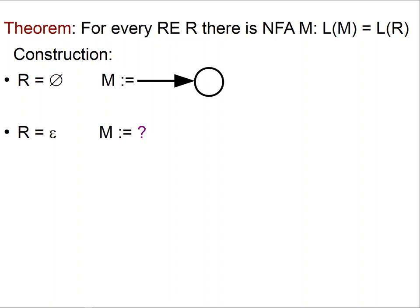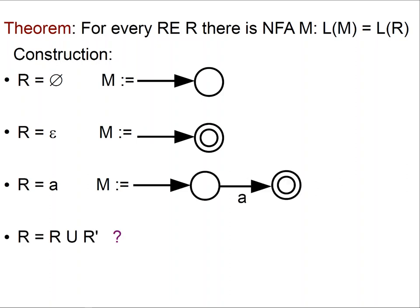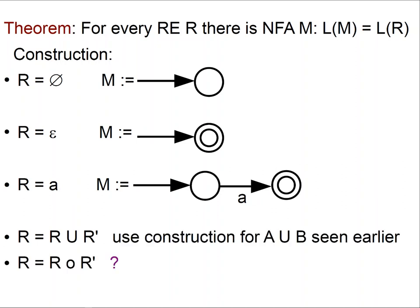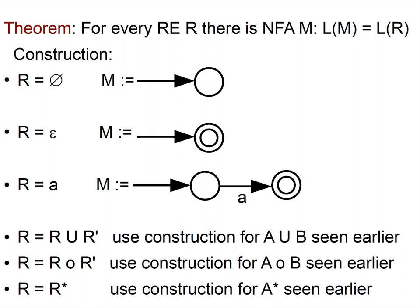If r is epsilon, then M would be: the start state is accept, you read anything you go to a sink state and reject. If r is a, M is: you start in the start state, you have to read an 'a' and then go to an accept state. If r is the union of two REs, you use the construction for union that we saw earlier. Same story for concatenation and same story for star.